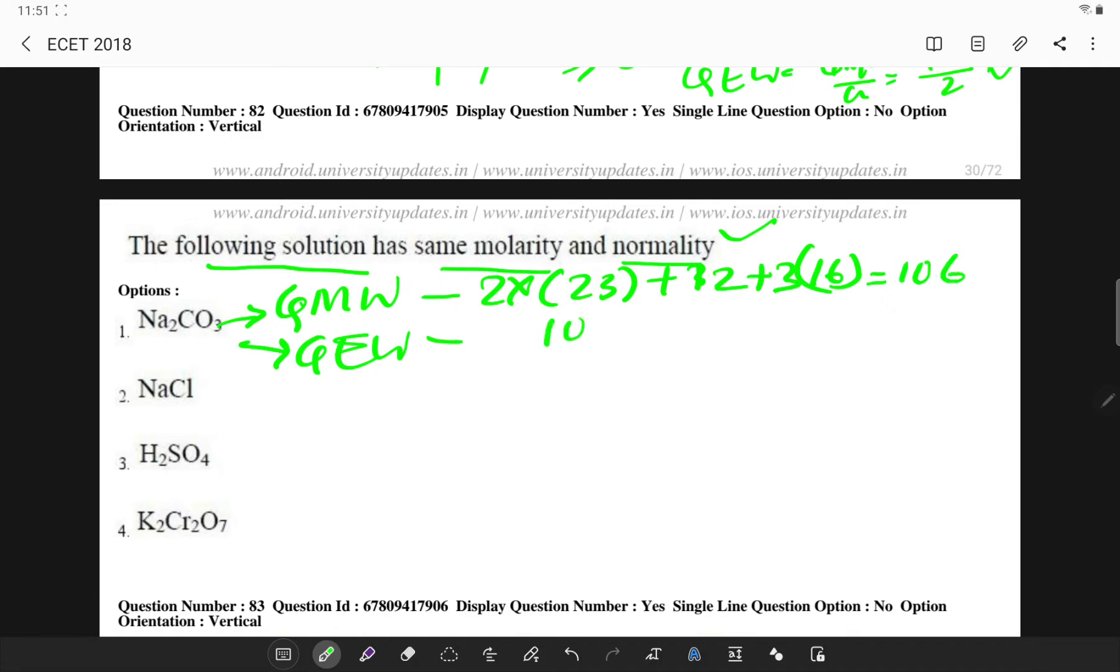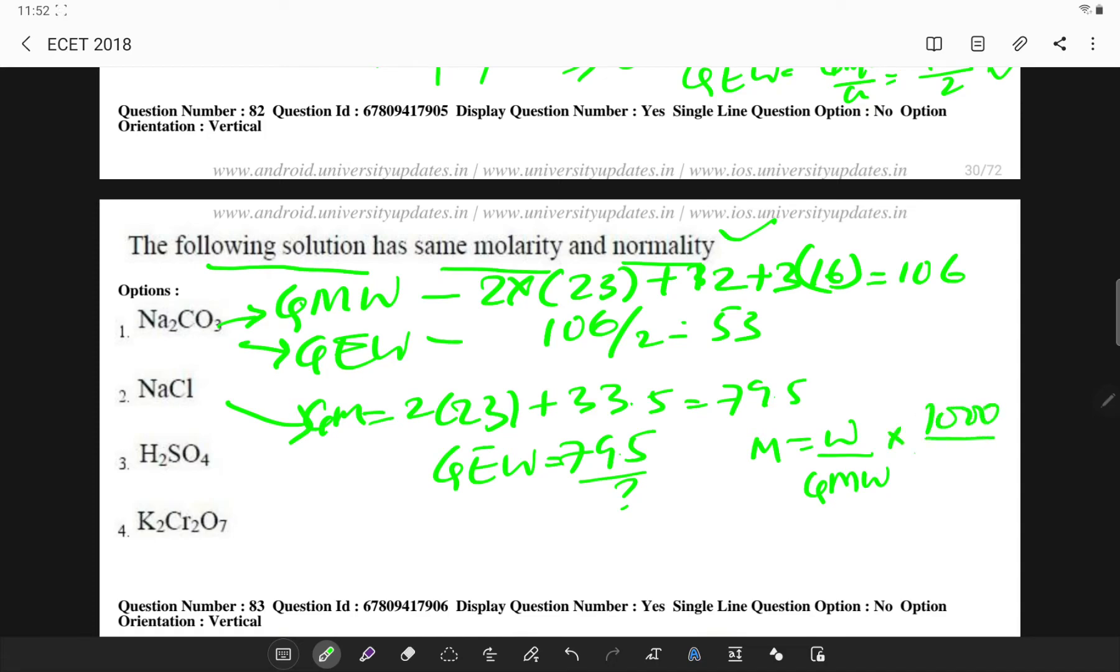For NaCl the GMW will be 23 plus 35.5 which is 58.5, and equivalent weight is 58.5 divided by valence. So molarity is weight by gram molecular weight times 1000 divided by volume in milliliters. Only for sodium chloride, since both molecular and equivalent weights are equal, therefore molarity and normality will be equal for sodium chloride.